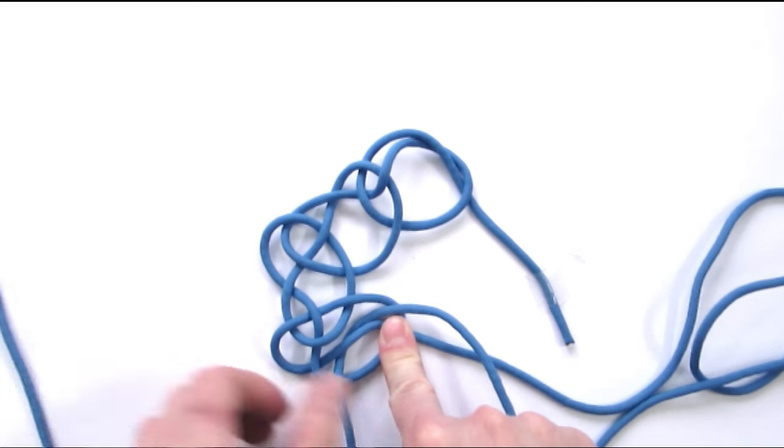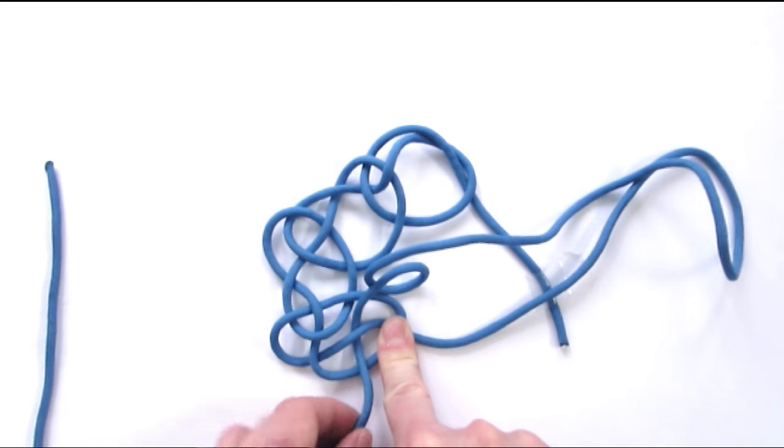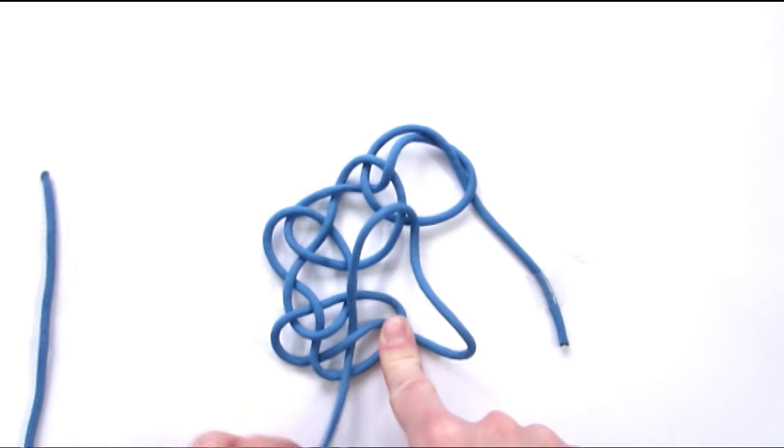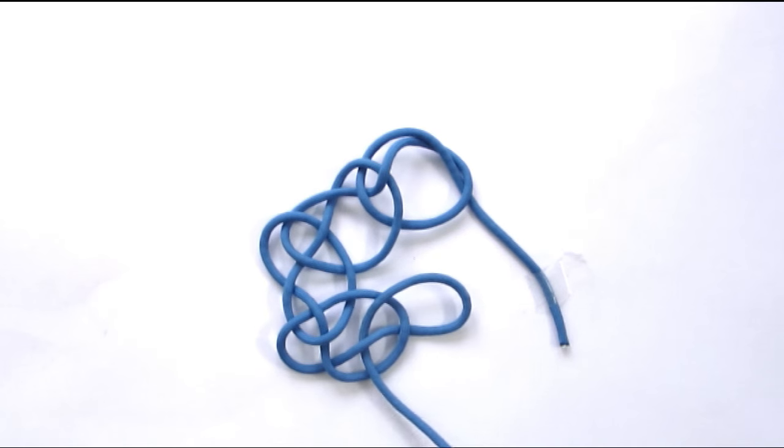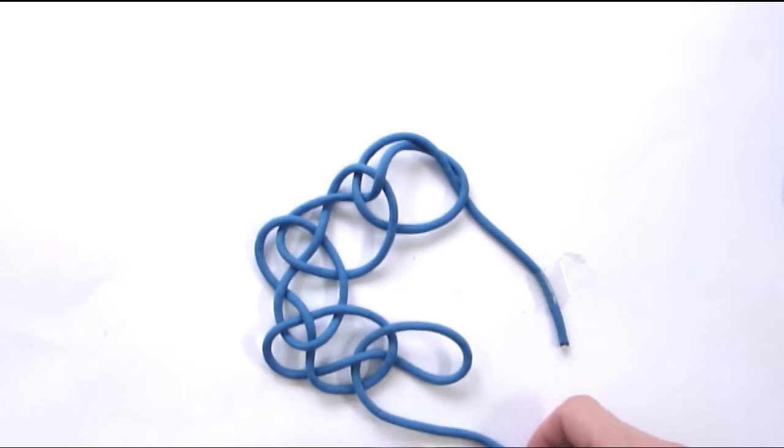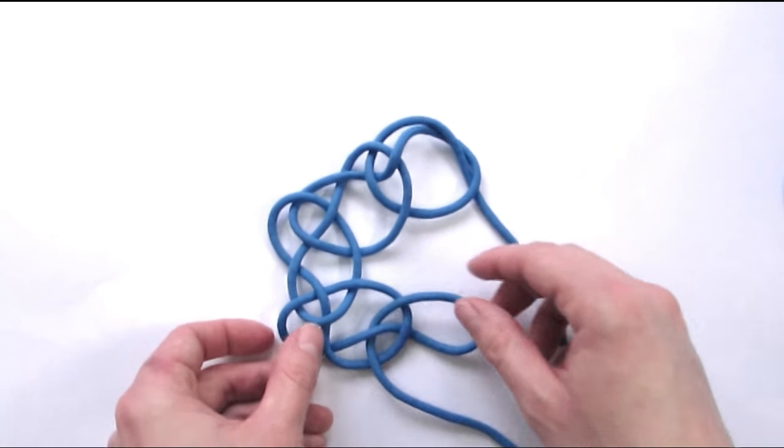Now with this we have enough loops to finish our Kringle mat. And we're going to do this by first placing our working end under the loop, just like we did before.